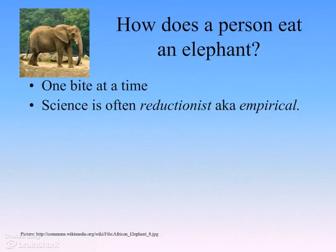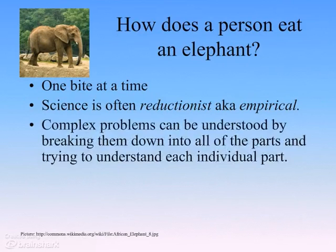The way that we often attack big problems is to look at them in a reductionist or empirical way. This means to break up complex problems into small problems, and then try to investigate and understand all the little parts, so that once you understand how the little parts work, you can put it all together and understand the sum.